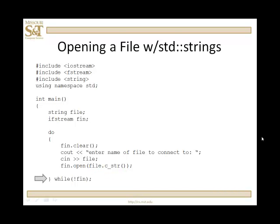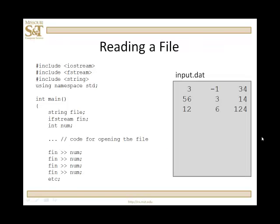Once that connects, you'll be out of that loop. Let's see how this works. We've set up a stream and connected it — how do you read in? It's going to work exactly the way the extraction operator works for the keyboard. When you open the file, imagine there's a little pointer pointing to the very first data item. When you do fin >> num, you read in that data item and the pointer moves to the next. So fin will pick up negative one, then 34, then 56, and so on.